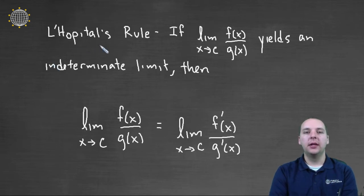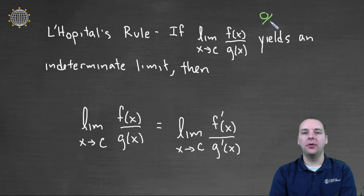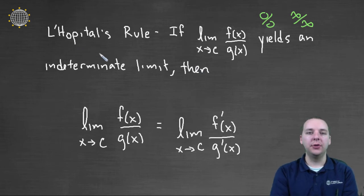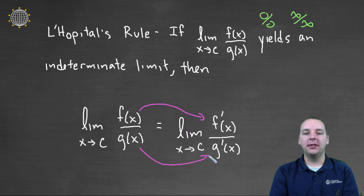If lim(x→c) f(x)/g(x) yields an indeterminate limit—like 0/0 or ∞/∞—then L'Hopital's rule says the original limit equals lim(x→c) f'(x)/g'(x). In essence, you differentiate the numerator, differentiate the denominator, and then retake the limit.